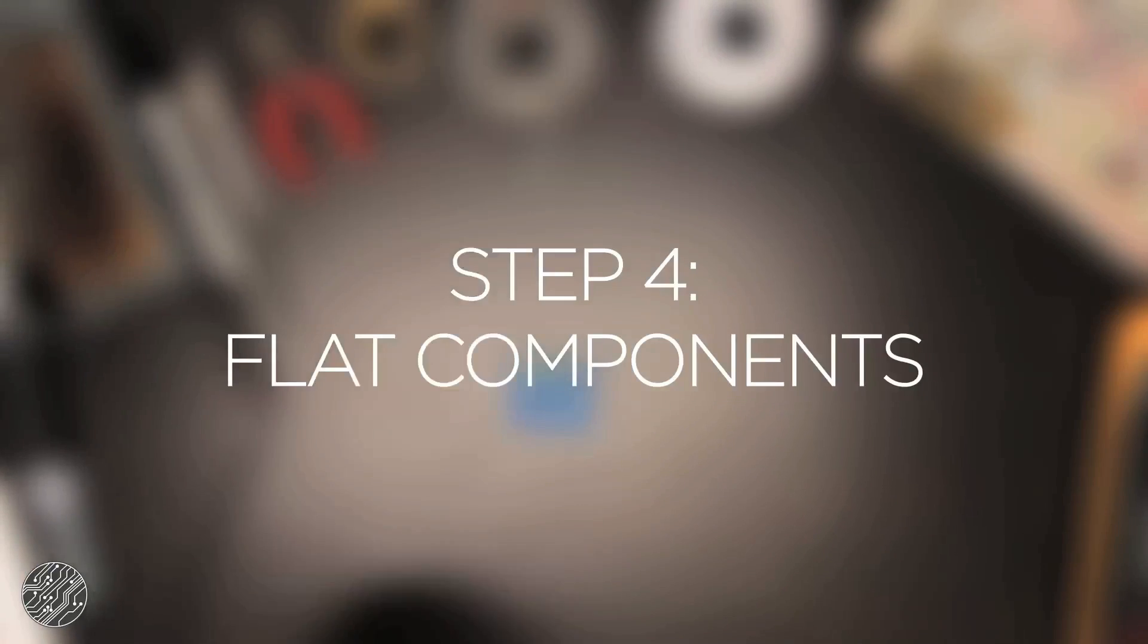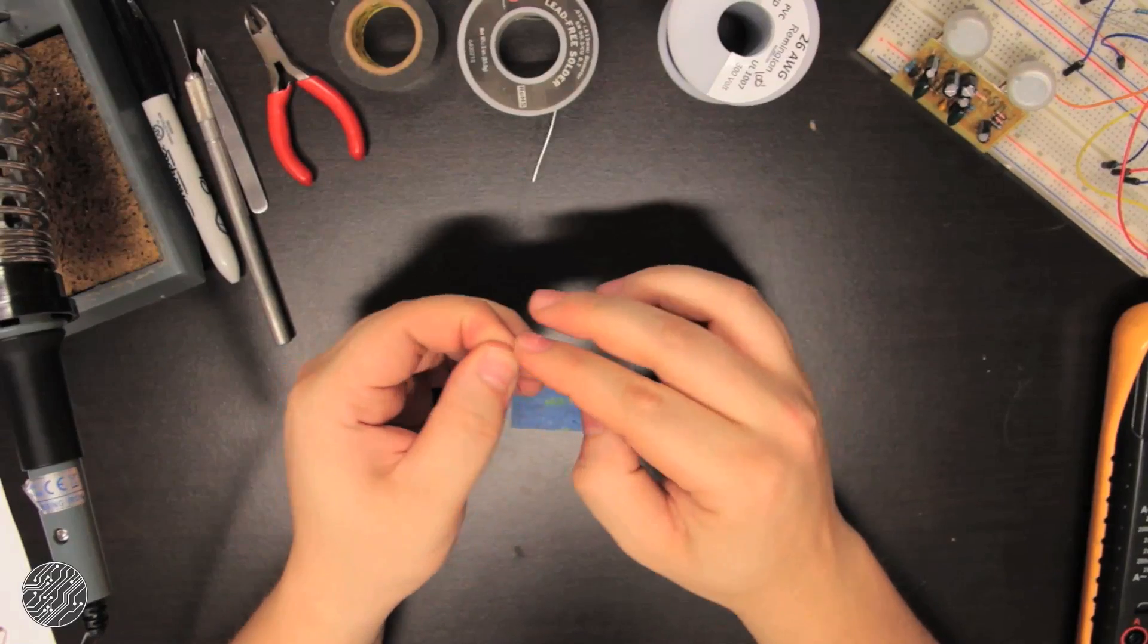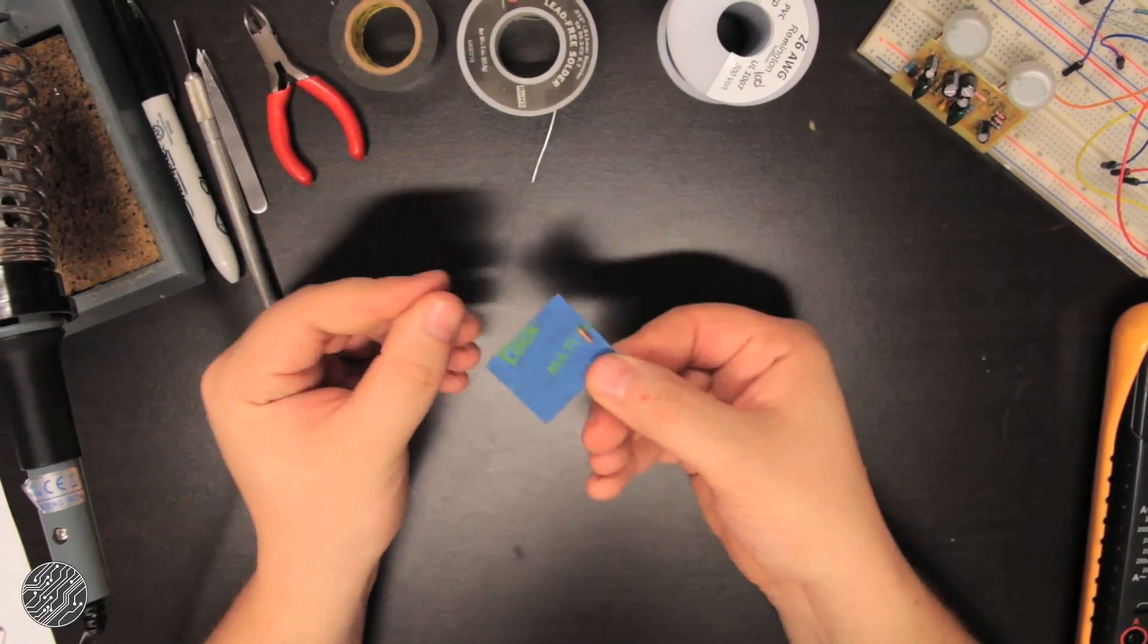Step four: flat components. I start with resistors and diodes when populating any circuit board. The reason is you end up having a more even surface when you flip the board over to solder in components.